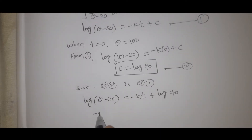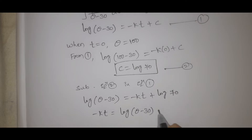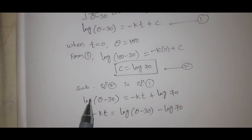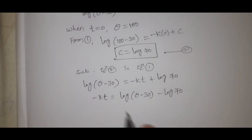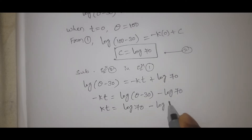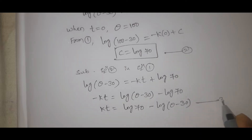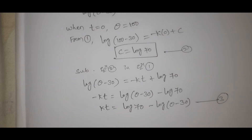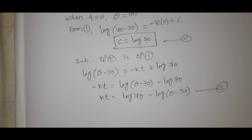Rearranging: minus kt equals log theta minus 30 minus log 70. Multiplying through by minus 1, kt equals log 70 minus log of theta minus 30. This is equation number 3.